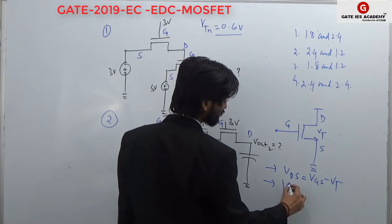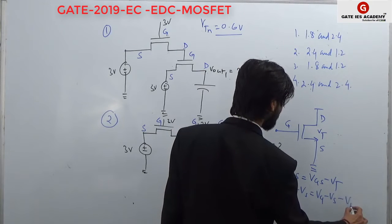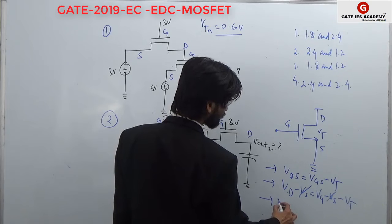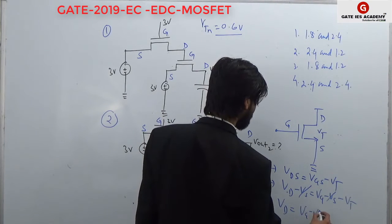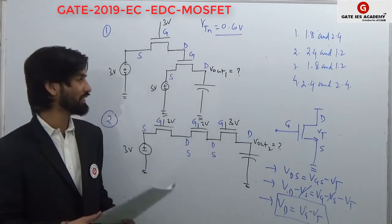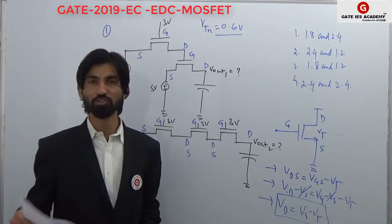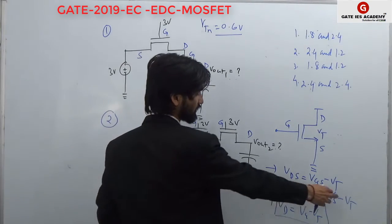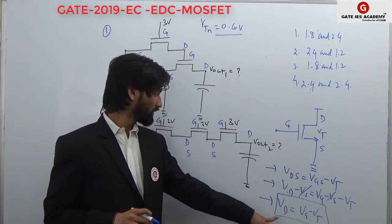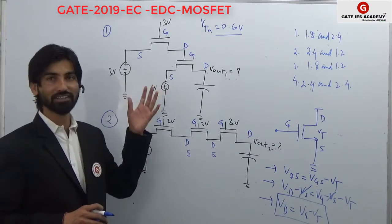If I write like this: Vd minus Vs equals Vg minus Vs minus Vt. So Vs and Vs cancel here. We can say Vd equals Vg minus Vt. So our Vd — the potential at the drain terminal — is independent of the source, because Vs is getting cancelled. From this concept, computing Vd equal to Vg minus Vt will help you find the right answer.